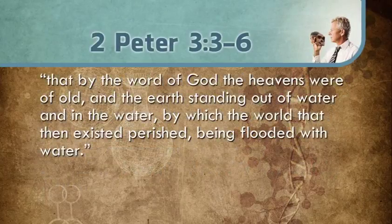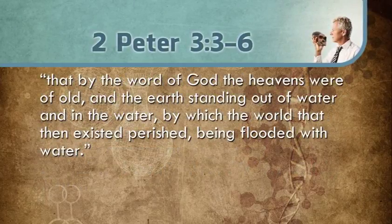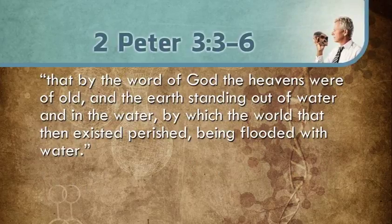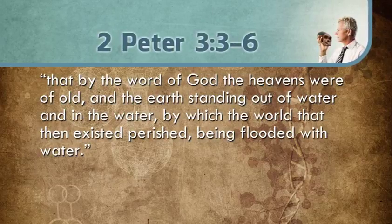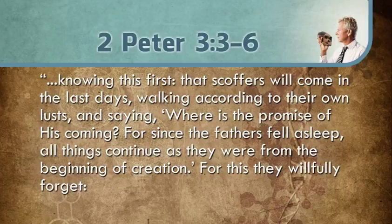'For this they willfully forget, that by the word of God the heavens were of old, and the earth standing out of water and in the water, by which the world that then existed perished, being flooded with water.' Peter discusses individuals who had a uniformitarian mindset — that all things continue as they were from the beginning. Peter responds by pressing the fact that things haven't always moved along in the same way. Present events are not a key to the past, as uniformitarianism suggests. Using uniformitarian thinking when viewing the earth is not accurate, because it doesn't account for events which happened in the past but don't happen regularly today, like catastrophic events.